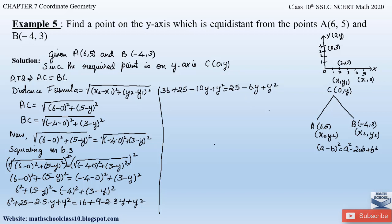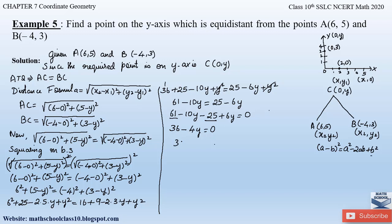Here y² appears on both sides, so it cancels. 36 + 25 = 61, so we have 61 − 10y = 25 − 6y. Sending 25 and −6y to the left-hand side: 61 − 25 − 10y + 6y = 0, giving 36 − 4y = 0. Sending 4y to the right: 36 = 4y, so y = 36 ÷ 4 = 9.